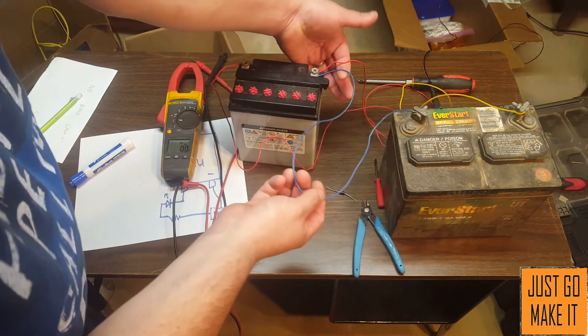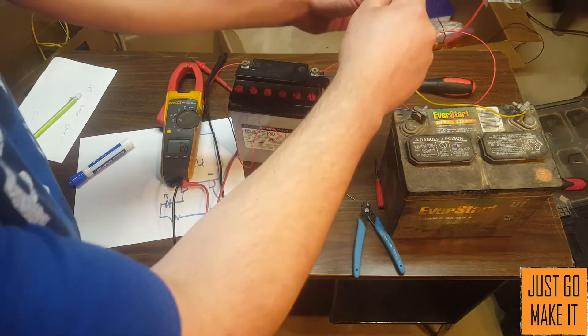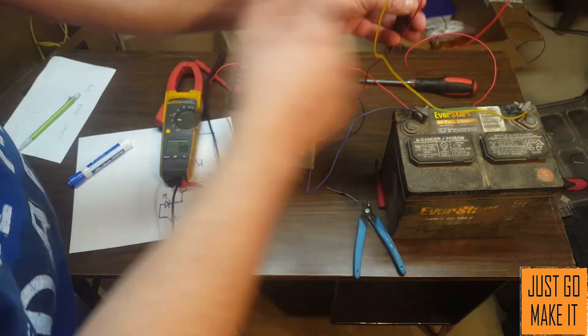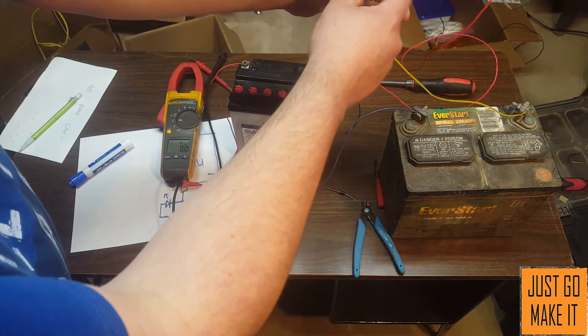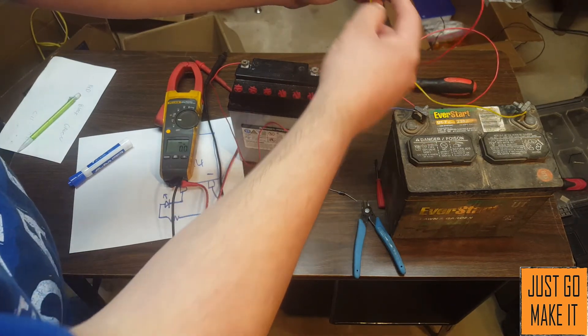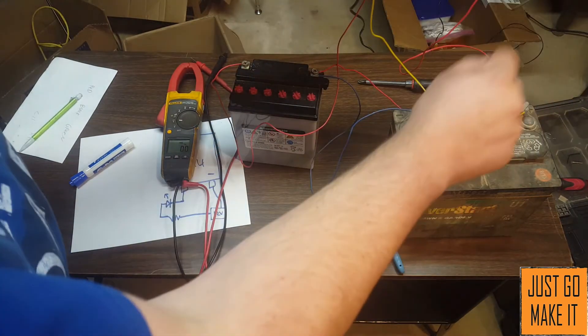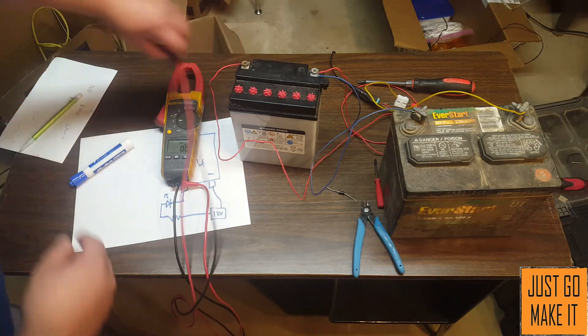One little thing I've done here is I have a second battery here. This is the battery out of the lawnmower. I just tied the two negatives together and I pretty much just copied what I did with a 1k resistor and the LED and then the wire going to the positive. I just duplicated that. So we've got a green LED for the motorcycle battery, the red one for the lawnmower battery.